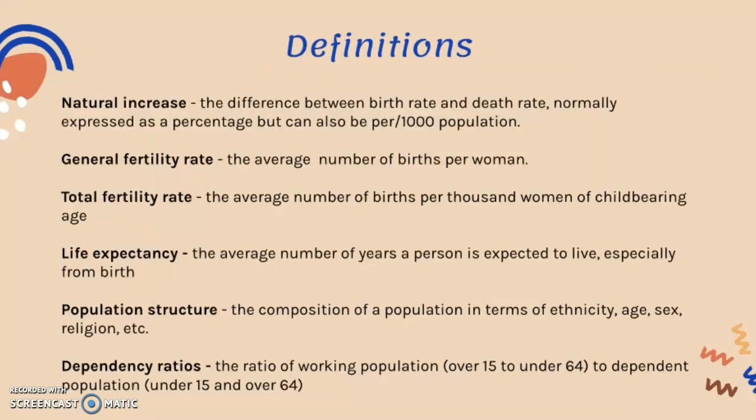Here are some important definitions. Natural increase is the difference between birth rate and death rate, normally expressed as a percentage but can also be per thousand of the population. A natural decrease means the death rate is higher than the birth rate. General fertility rate is the average number of births per woman. Total fertility rate is the average number of births per thousand women of childbearing age — make sure you know the difference between those two.